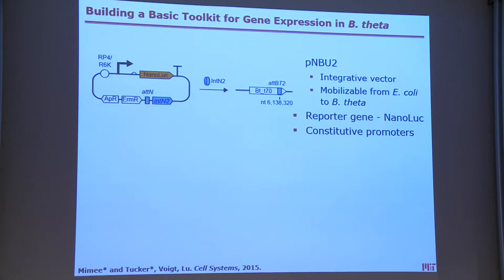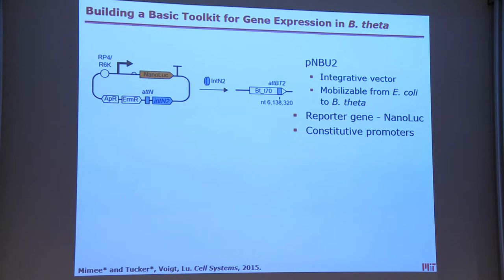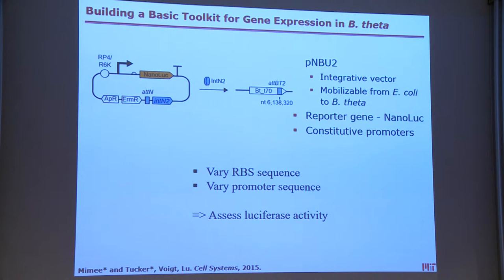We started from the simple plasmid developed in the Gordon lab, PNBU2 — an integrative plasmid in B. thetaiotaomicron that integrates via a serine tRNA site. There are only two serine tRNAs in Theta, so inactivating one limits the possibility of multiple integrations. It is selected with erythromycin and is a suicide plasmid in Theta. It carries NanoLuc, a smaller version of luciferase that gives a readout for anything cloned in front of it. From this PNBU2 sequence, we varied the ribosome binding site and promoter sequences and assayed luciferase activity in different conditions.